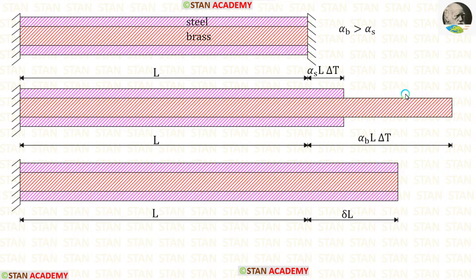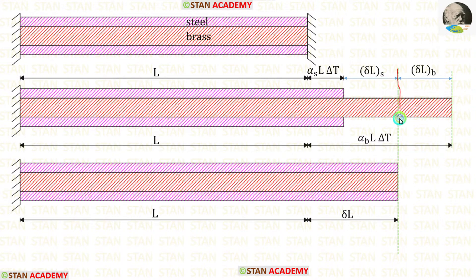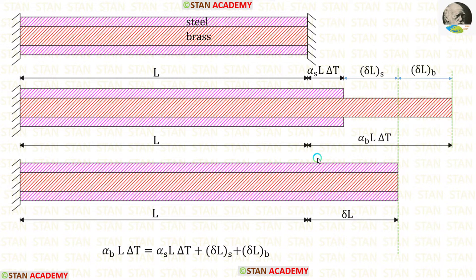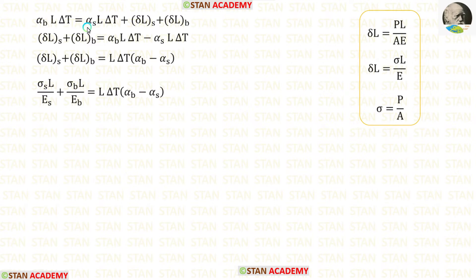In reality, the brass and steel take an intermediate position. For brass to reach this intermediate position it has to compress by delta l_b, so brass will experience compressive stress. For steel to reach this intermediate position it has to expand by delta l_s, so steel will experience tensile stress. Now let us form an expression: alpha_b × L × delta_T equals alpha_s × L × delta_T plus delta_l_s plus delta_l_b. Taking alpha_s × L × delta_T to the other side gives a negative term.